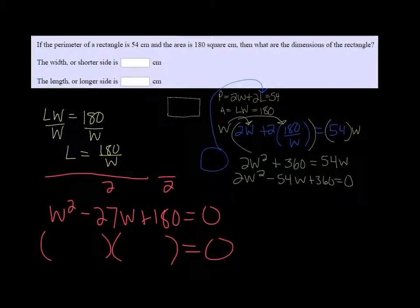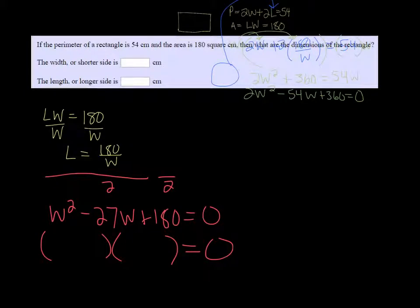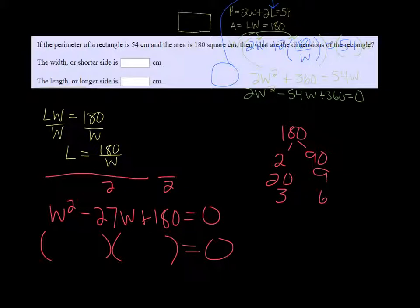So let's think here, we got 180, we need factors of 180 that add up to negative 27. We know they're going to both have to be negative. So if we start looking at some factors of 180, 180 can be divided by 2, so 2 times 90, or 90 times 2, and then also we can do 20 times 9. We can do 3 times 60, or 30 times 6.